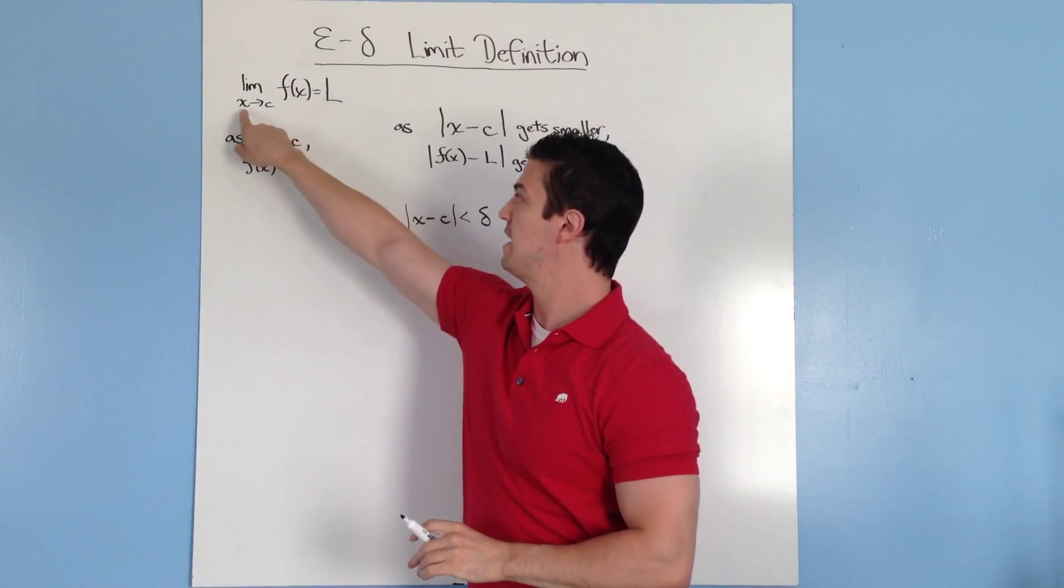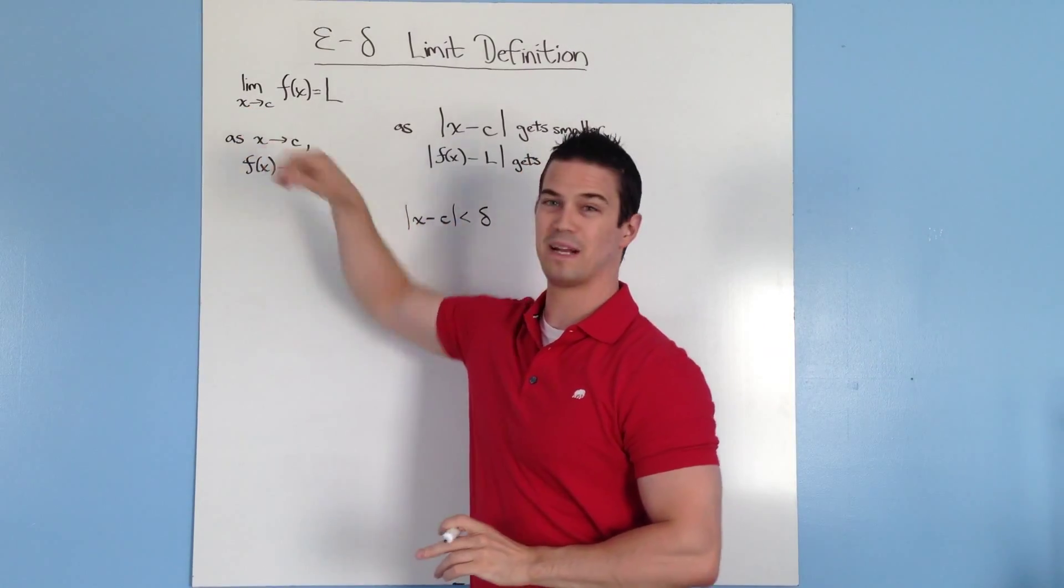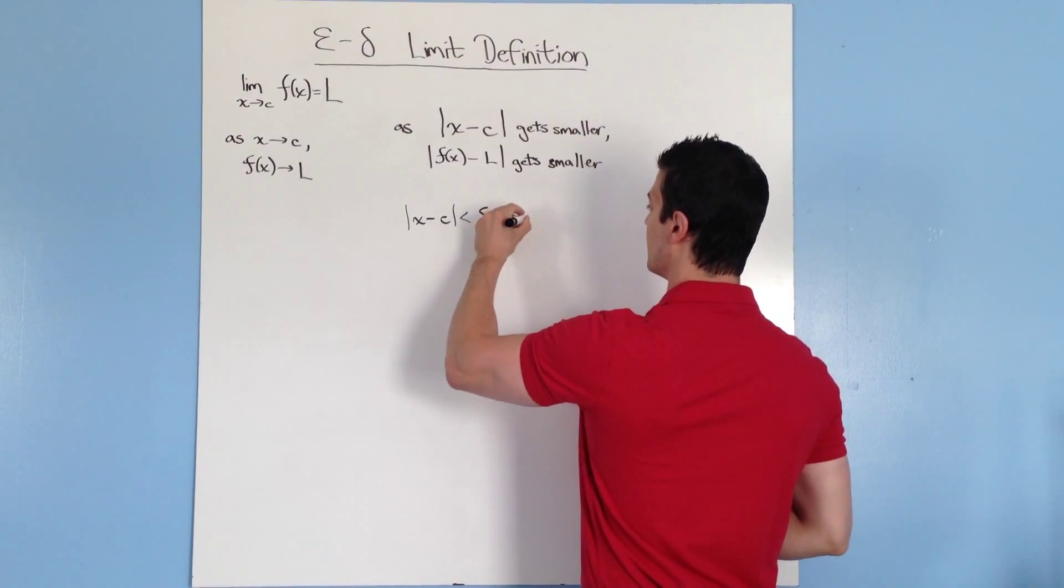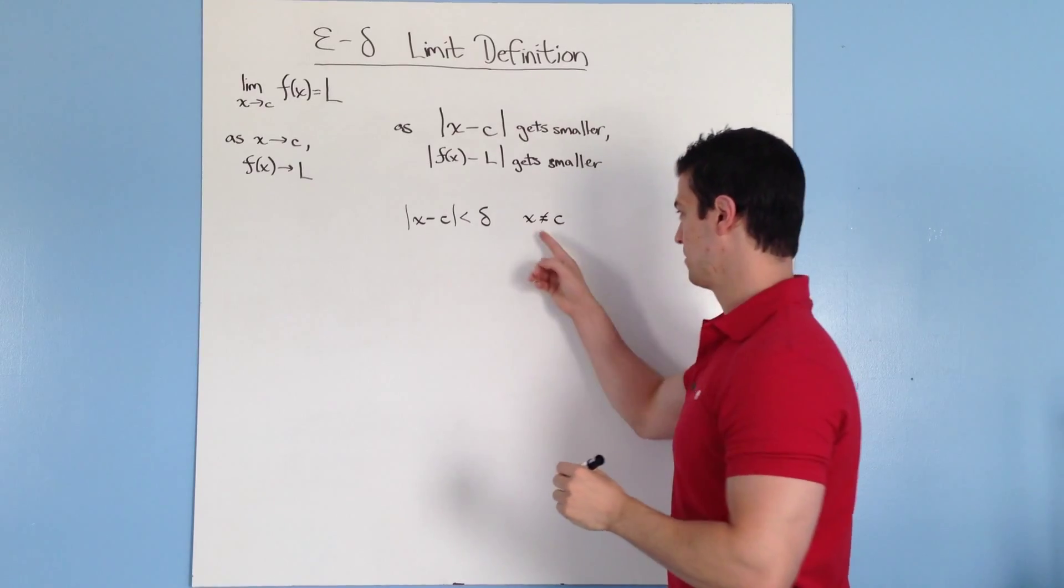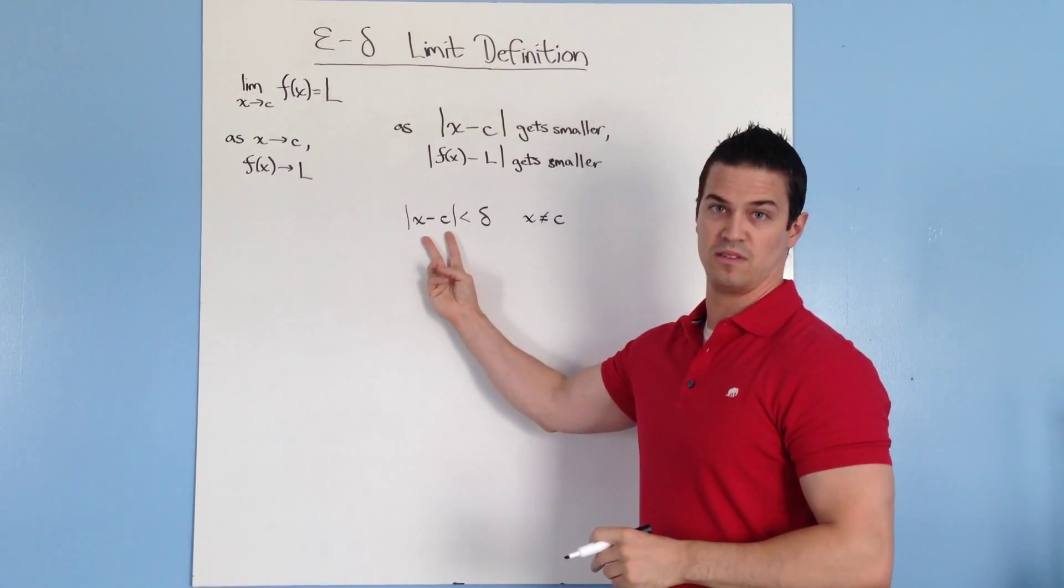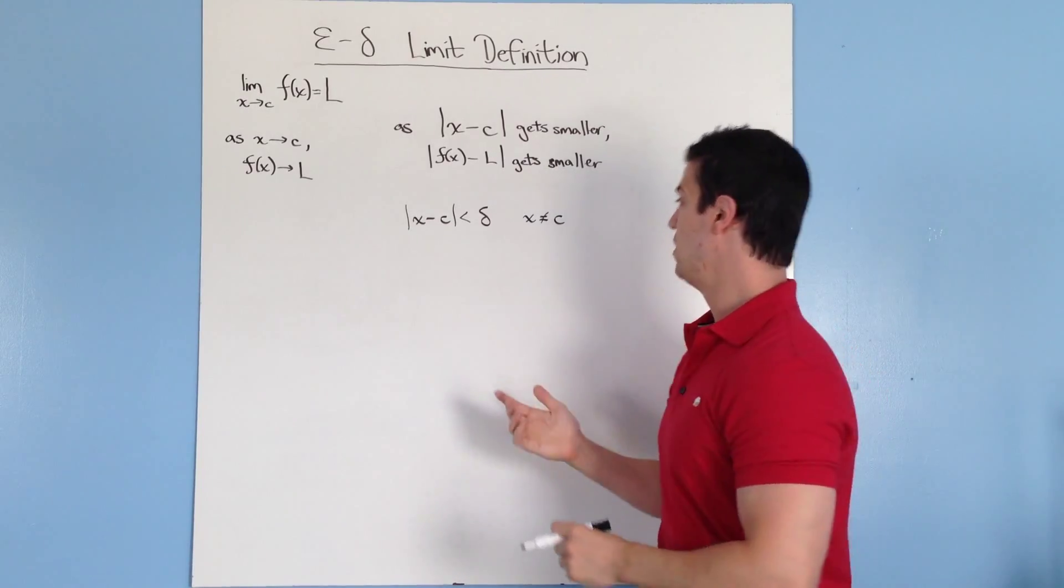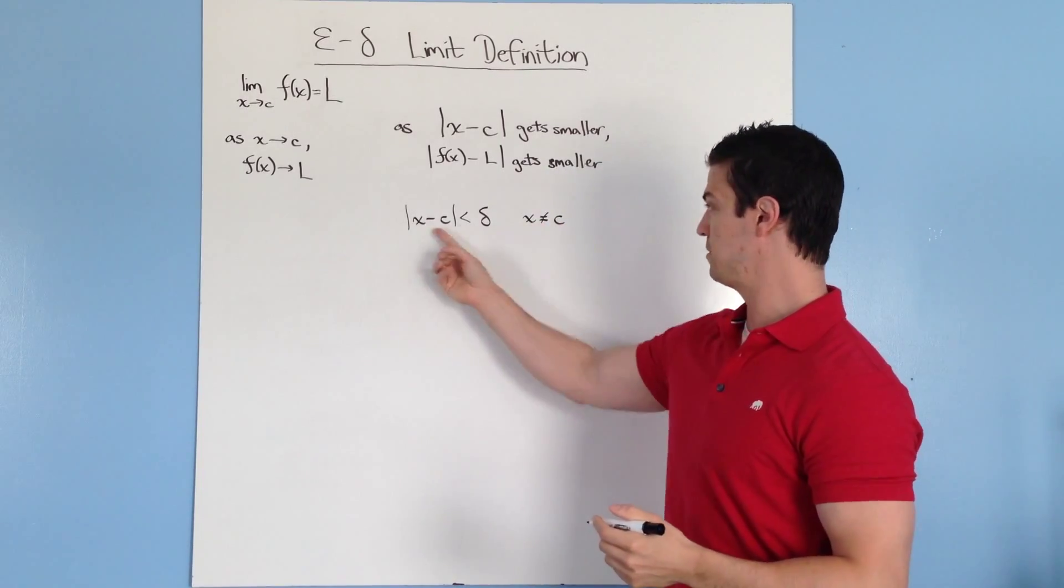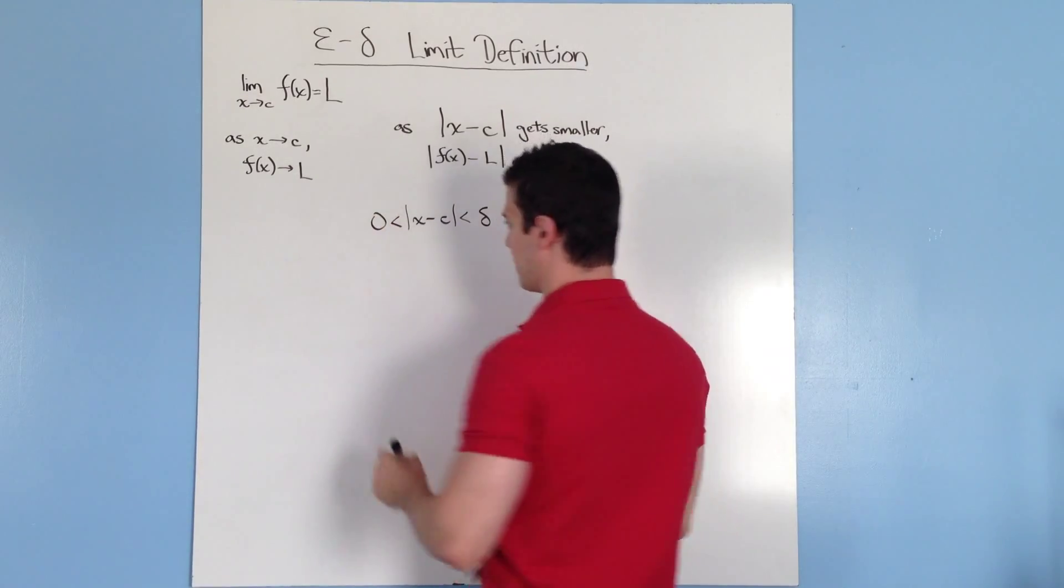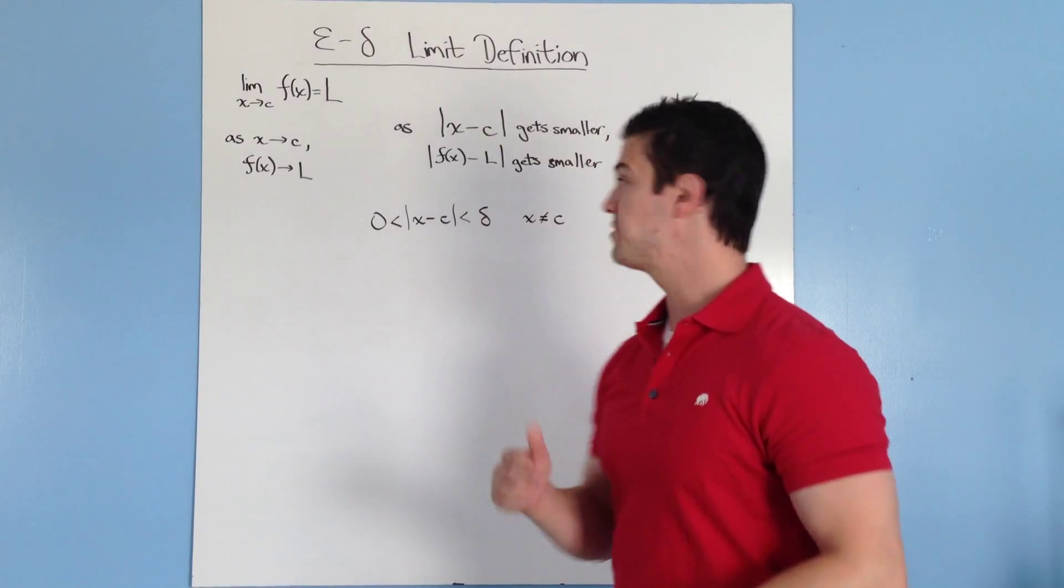Now, based on our definition over here, x is getting closer to c, but it's never actually becoming c, so what I'm going to do is write x can never be equal to c. Another way of doing that is that if these were ever equal, it'd be equal to zero. So since it can't be equal to zero, I'm just going to say that this x minus c has to be greater than zero.